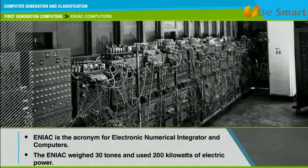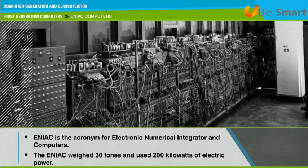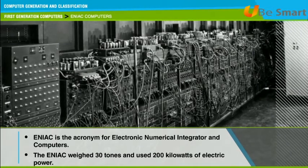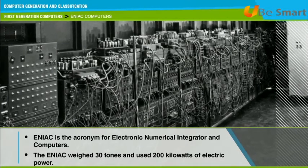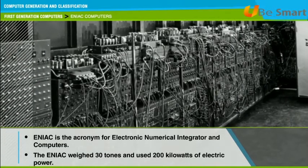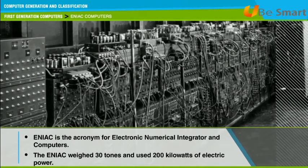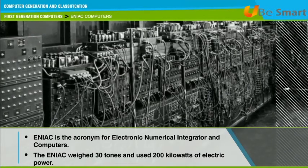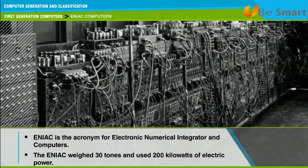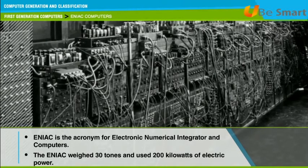The ENIAC weighed 30 tons and used 200 kilowatts of electric power. ENIAC contained electrical devices such as 18,000 vacuum tubes, 1,500 relays, and hundreds of thousands of resistors, capacitors, and inductors. ENIAC's fields of application include weather prediction, atomic energy calculations, cosmic ray studies, thermal ignition, random number studies, wind tunnel design, and other scientific uses. ENIAC soon became obsolete due to the need for faster computing speeds.